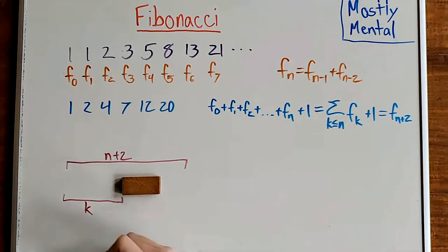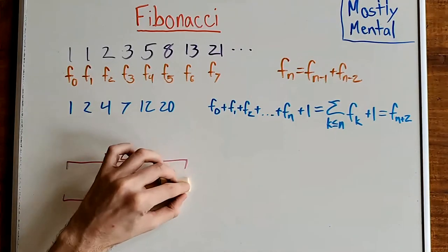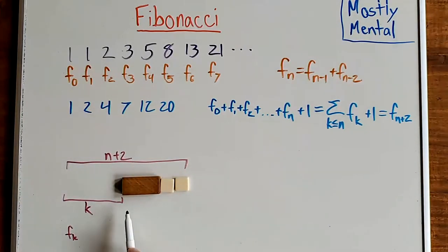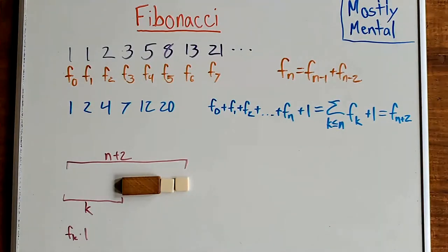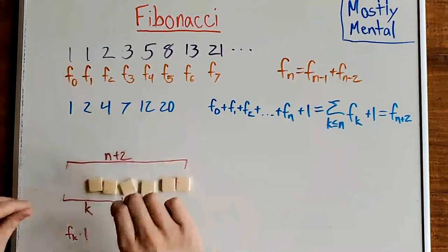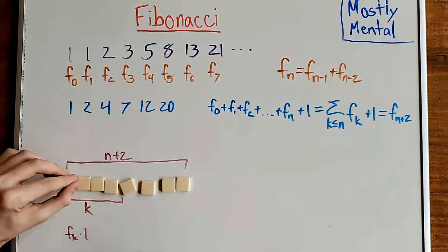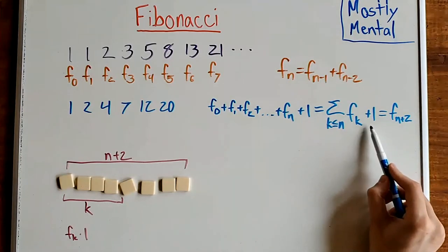then there are F sub k ways to tile the left. And since this is the last domino, we know that everything afterward must be a square, so there's only one way to tile everything to the right. And so, adding this up over all k, we get this sum here. There's also one additional tiling if we just don't have the domino, if everything is squares. And that gives us the extra 1 we're looking for.